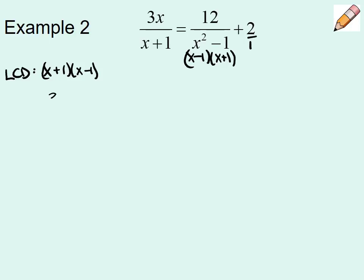Let's take a look at what each fraction is missing from the LCD. My first fraction is missing the x minus 1. So I'm going to take top and bottom times x minus 1. Equals my second fraction, and I'm going to keep its denominator simplified. My second fraction has both pieces of the LCD already, so I'm not even going to use that one. My third fraction has a 2 over 1. If I look at the LCD, it's missing both pieces, which means top and bottom need to be multiplied by both pieces of the LCD.